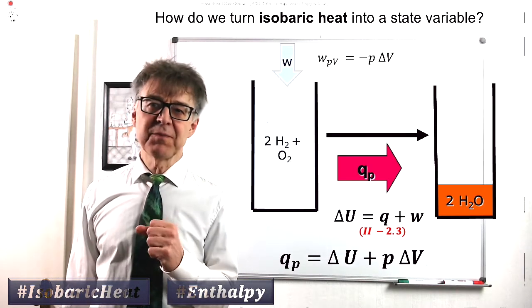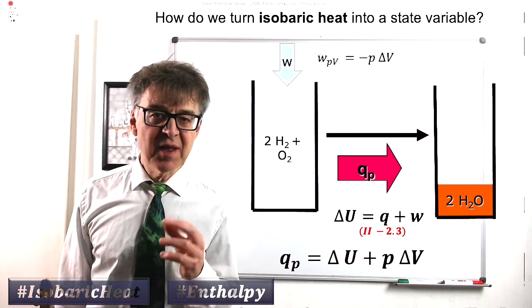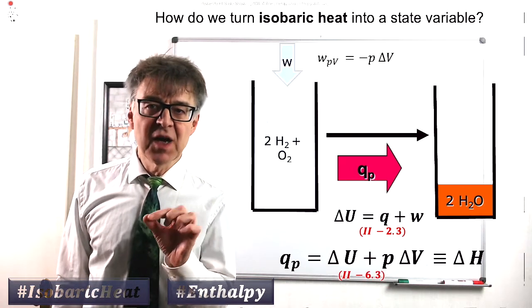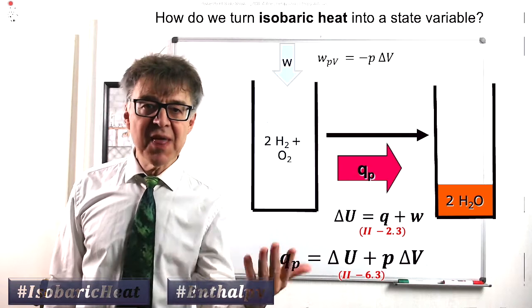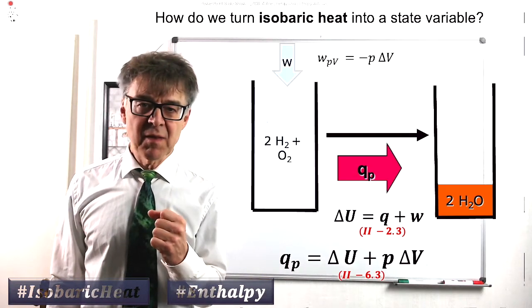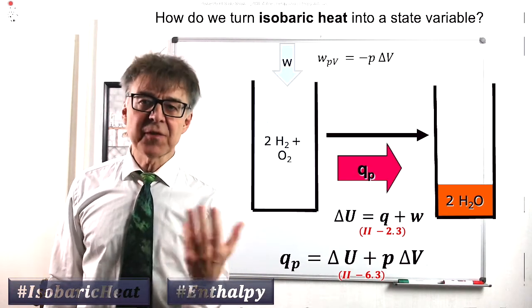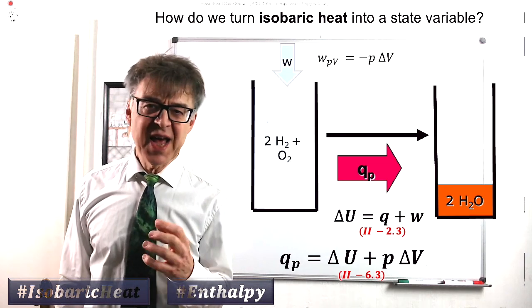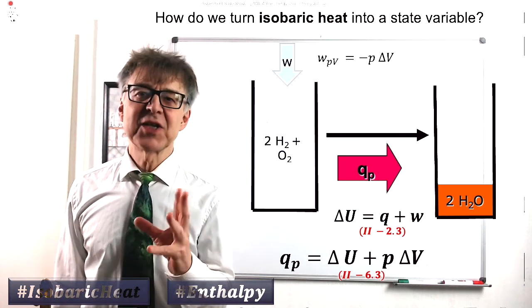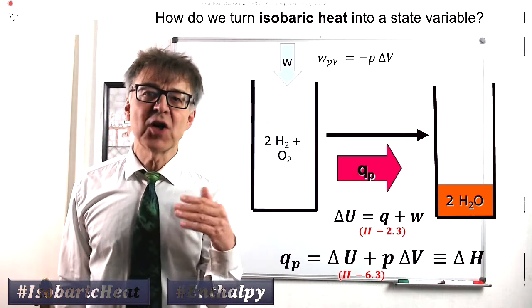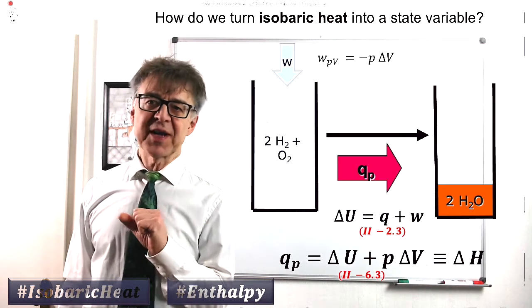Because we very often measure isobaric heat, the combination u plus p times v was simply renamed enthalpy. Thus enthalpy is an artificial quantity and has no clear meaning, but the change in enthalpy is always the same as the spontaneous isobaric heat.